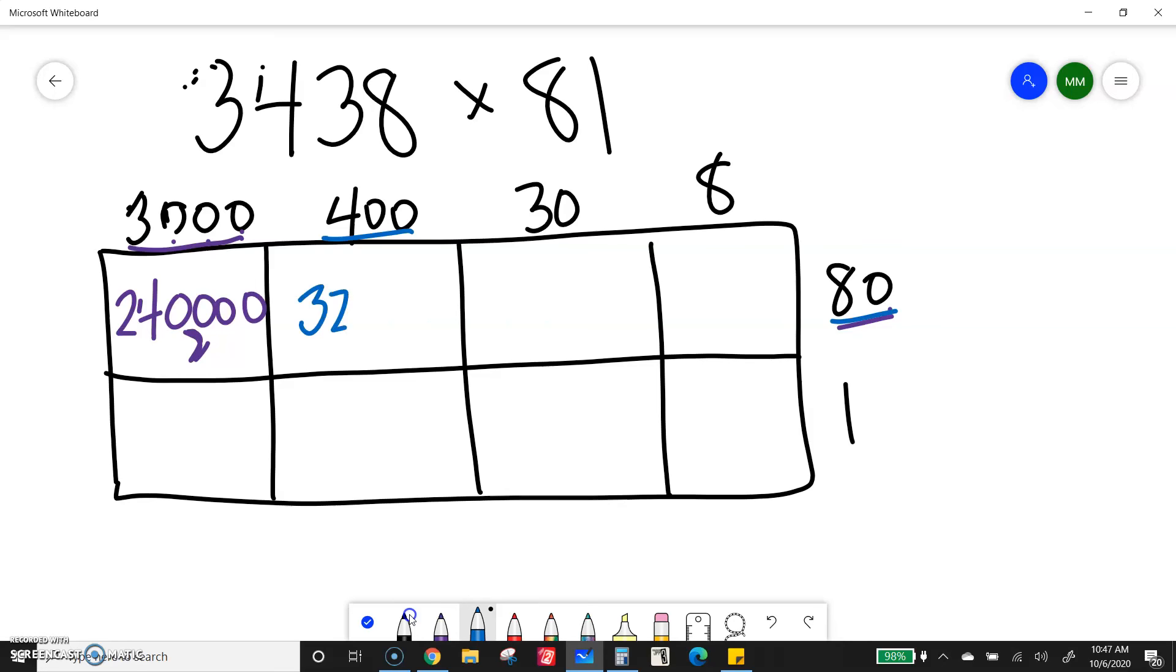Well, 4 times 8 is 32. One, two, three zeros. 30 times 80. 3 times 8 is 24. Put on two zeros. And 8 times 80. 8 times 8 is 64 with one zero put on there.